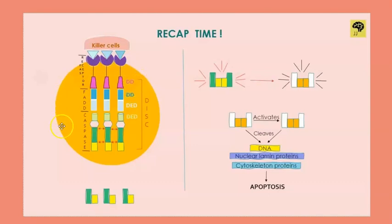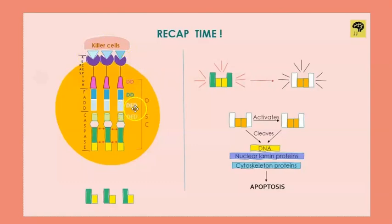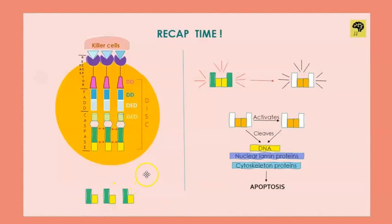The Fas receptors attach to caspases, but to bring caspases into this pathway we need an adapter protein. Here the adapter protein is FADD, which stands for Fas-Associated Death Domain. It has a death domain that attaches to the death domain of the Fas receptors, and it also has a death effector domain which attaches to the death effector domain of caspases. So the pro-caspases are now in close proximity — they cleave each other and become active caspases.